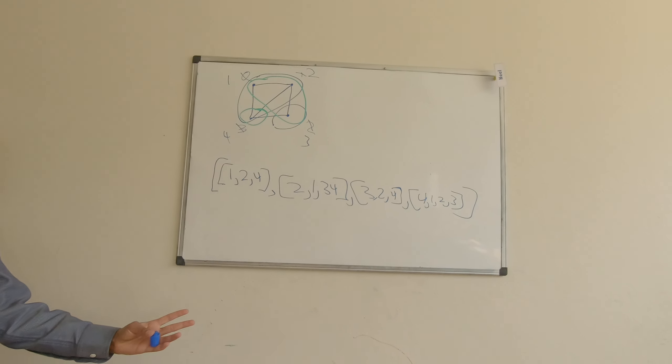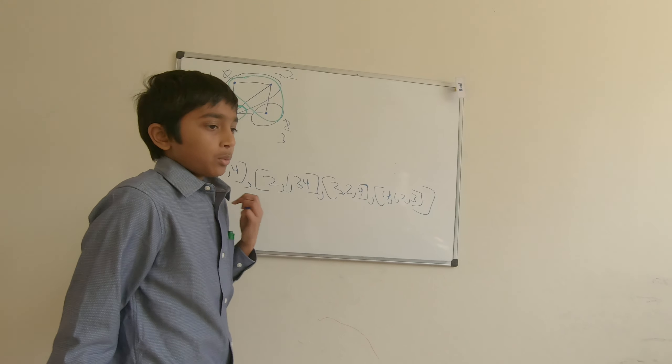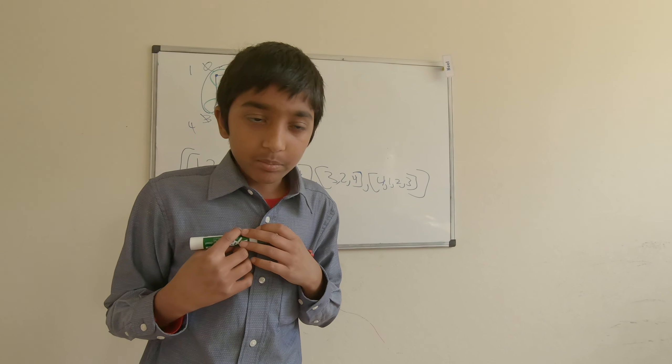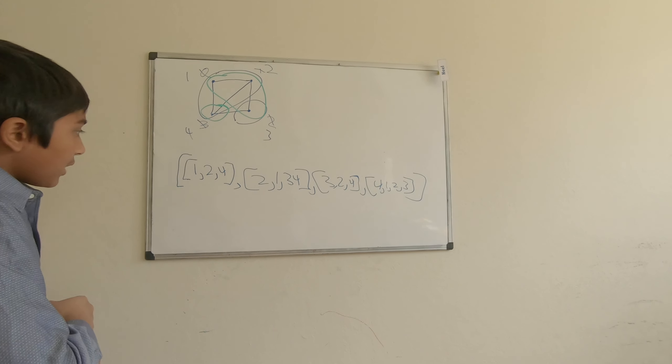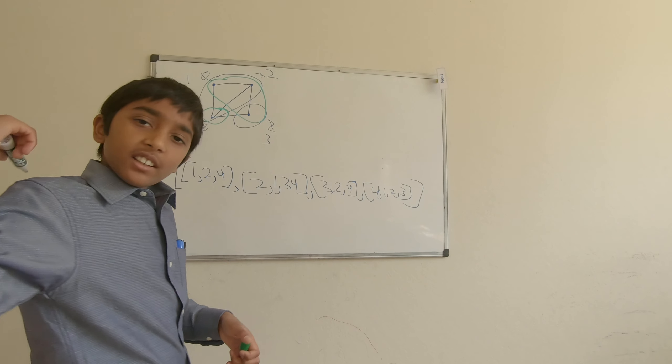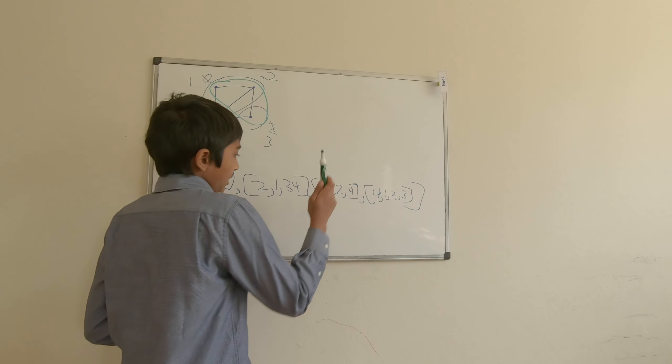So now, what we're going to do is we're going to pick our random edge. Because remember, this is a randomized algorithm. So we just pick anywhere, any index of this list. 0, 1, 2, 3. Let's say we pick 2.